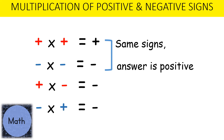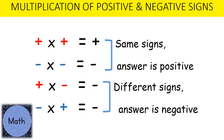Now what happens when the signs are different? A positive multiplied by a negative gives us a negative, and it doesn't matter which order — for example, a negative multiplied by a positive is also a negative. So if we have different signs, the answer is negative.